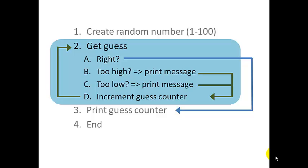So we'll start by creating a random number between 1 and 100. We'll use a while loop to get a guess, look at the guess, increment the counter. And then when the user guesses the right guess, we'll exit the while loop and print the guess counter. Now that we've planned out how we want our program to work, let's start writing code.